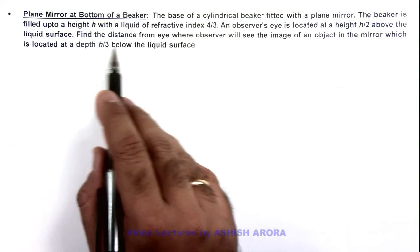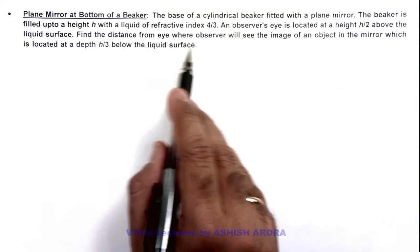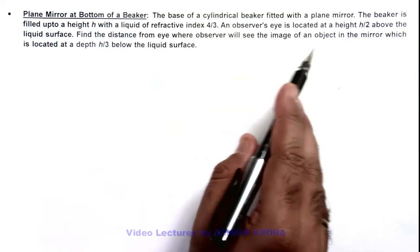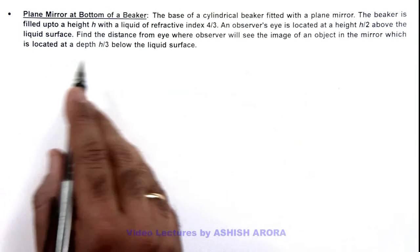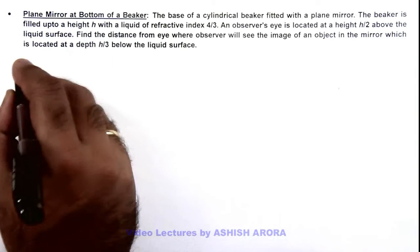We are required to find the distance from eye where observer will see the image of an object in the mirror, which is at a depth h/3 below the liquid surface.